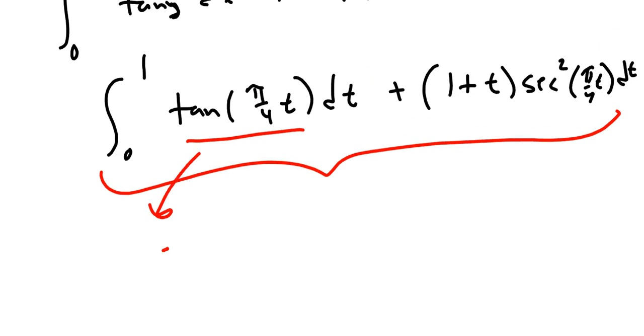I'll give you a hint. If you wanted to compute that by hand, think of tangent as sine of something over the cosine of something, and then think about a u substitution where you'll let u be the denominator and you can get an ln of something. Over here on the right, you've got a function of t times a function of t. Look, you've got 1 plus t times secant squared of something with the t in it. That's going to be integration by parts.